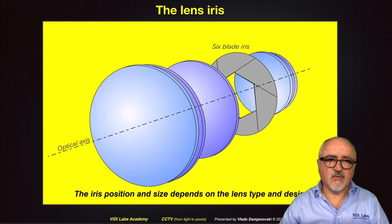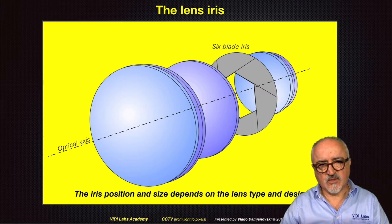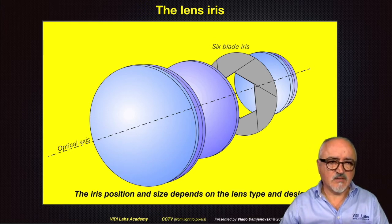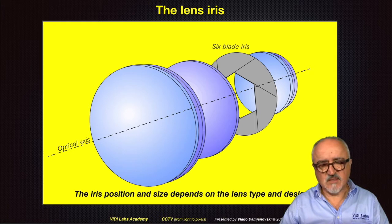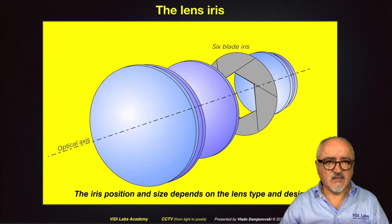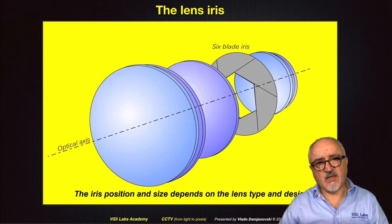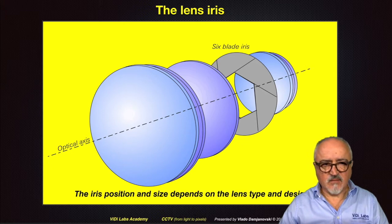Lenses that have a controllable iris opening, such as manual iris lenses or auto-iris control lenses, still state their maximum light-gathering ability by this f-stop number, but that refers to the maximum possible opening iris of that lens. Other f-stops with smaller light-gathering abilities would be possible by closing the lens iris manually or automatically. F-stop is really the maximum light-gathering ability of a lens. Many lenses will have no controllable iris — they only have one opening which is the maximum. This is typical for smartphones, pinhole cameras in CCTV; in such cases we refer to their f-stop as their only available light-gathering parameter.